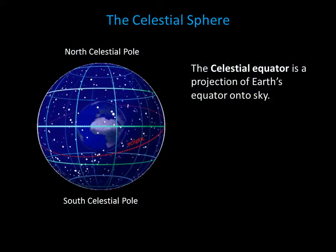You are probably familiar with the Earth's equator. We want to put a similar circle on our celestial sphere — we call this circle the celestial equator. It's simply the projection of Earth's equator onto the celestial sphere.